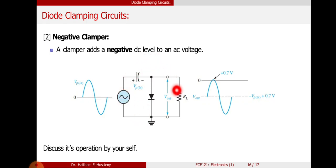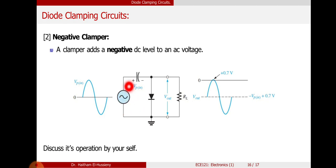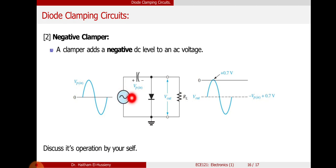This is a clamping circuit, which means the DC level will be shifted to the negative side. That is why it is called the negative clamper. Our input is Vp_in sine omega t. In the function generator, the input is a sine wave. We are using a 20V peak-to-peak sine wave, so it will be 10 sine omega t.